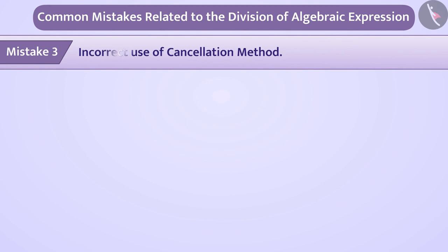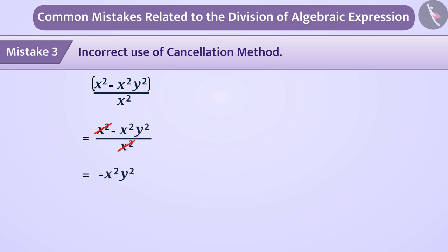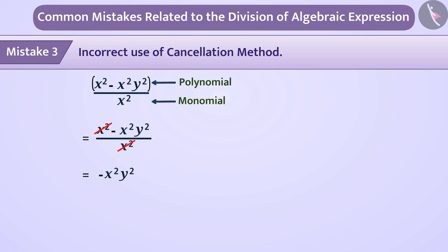Mistake three: incorrect use of the cancellation method. Amir asked Samir to find the result of x squared minus x squared y squared, divided by x squared. Samir solved it incorrectly. Some children think that if a polynomial is divided by a monomial, like terms in the numerator and denominator can be cancelled. Samir cancelled the denominator x squared with the x squared term from the numerator — but this is wrong.